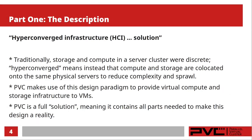PVC is a hyper-converged infrastructure, or HCI, solution. Traditionally, going back at least a decade or two in system administration, your storage and compute in a server cluster were discrete — storage on a SAN or NAS on one hand, and the compute that runs virtual servers on the other, separate on separate pieces of hardware. Hyper-converged means instead that the compute and storage are co-located onto the same physical servers, which reduces complexity and sprawl. You only need one set of servers to provide both storage and compute.